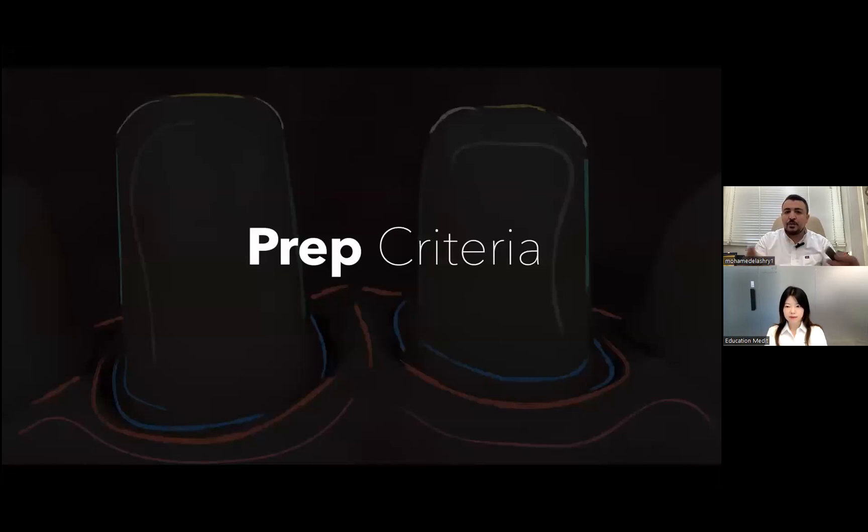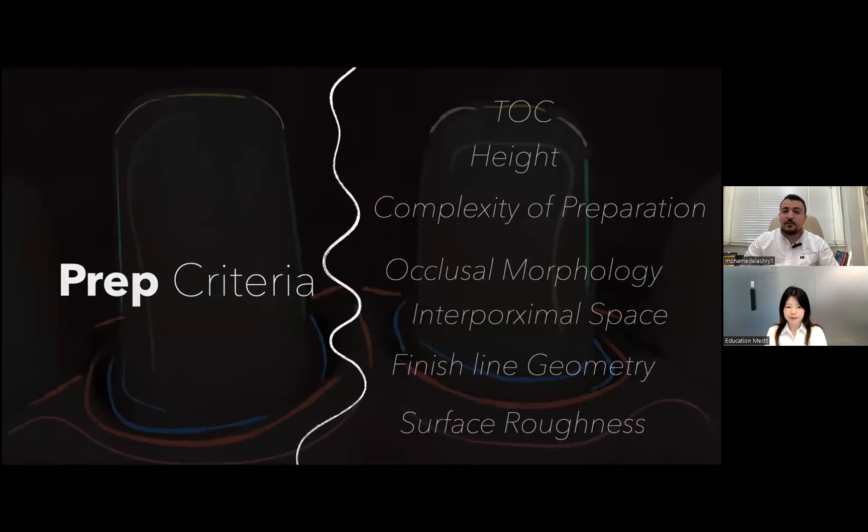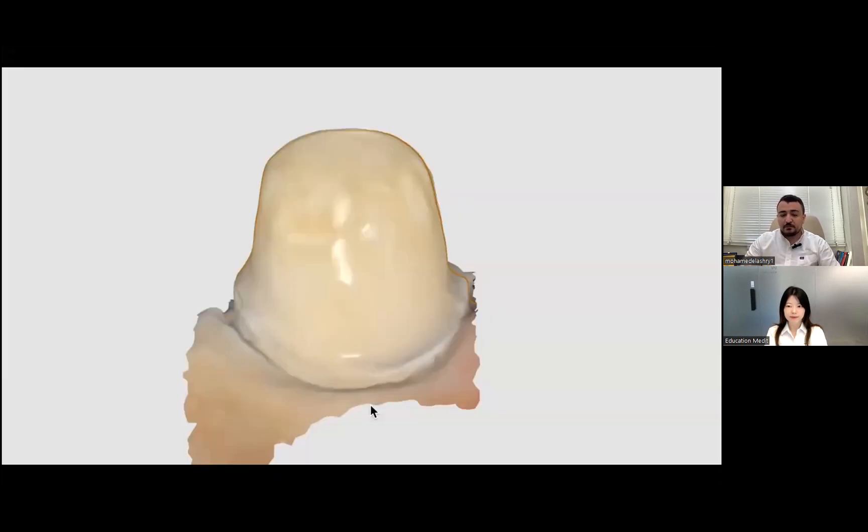The prep criteria that I'm going to discuss today are many. Let me start with the first one, TOC. What is TOC or total occlusal convergence? In a very simple way, it's the taper of the prep. The taper is the angle between two opposing walls.